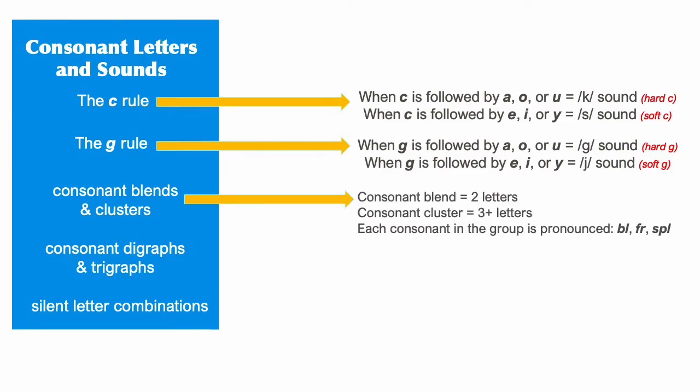In a consonant blend or cluster, each consonant sound is pronounced distinctly as in BL as in the word black, FR as in the word freeze, or SPL as in the word splash. Two consonants together that make this kind of sound are called a consonant blend. Three or more consonants together that make this kind of sound are called a consonant cluster. So BL as in black would be a blend, SPL as in splash would be a cluster.